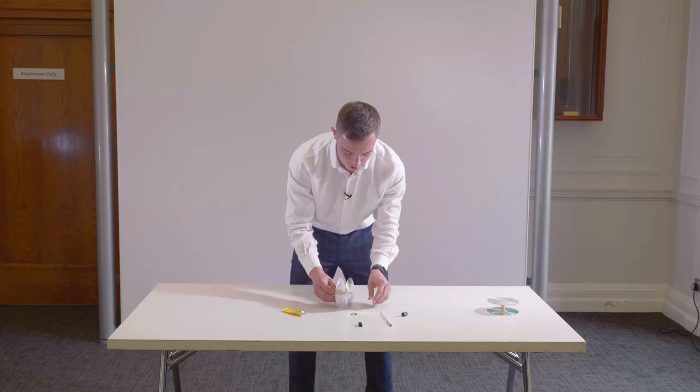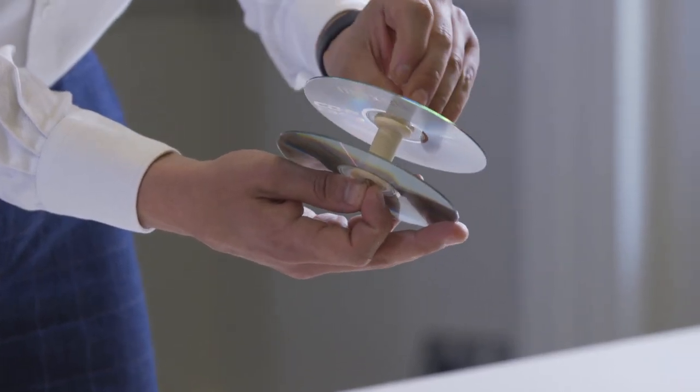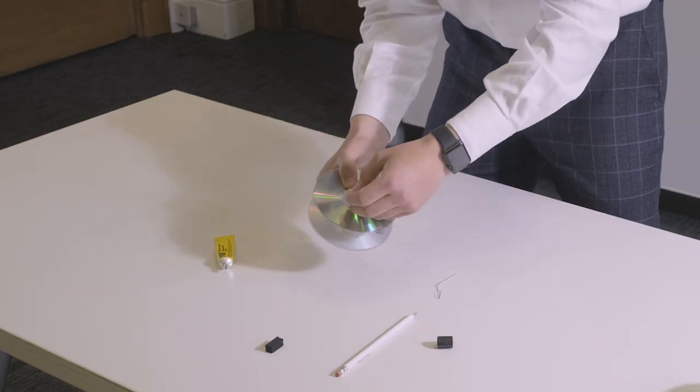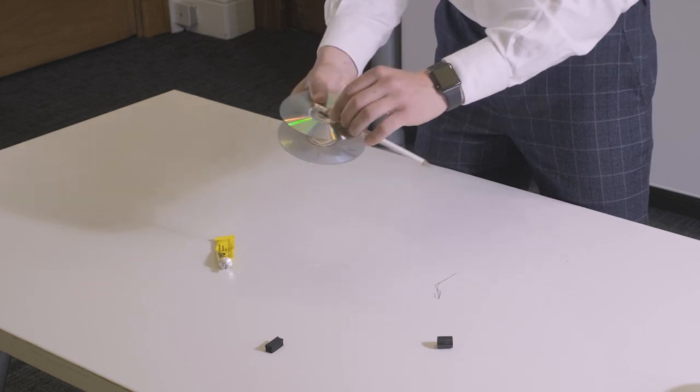Now making sure you are holding one side of the elastic band place the washer onto the elastic band and then place the pencil through the elastic band to secure it on that side.